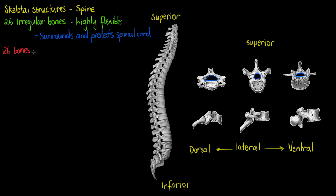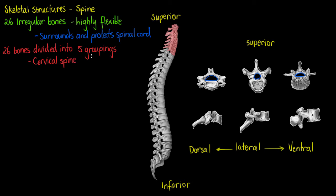We have 26 bones that make up our spine, and we are going to divide them into five separate groups. The first group, at the most superior end of our spine, is called the cervical spine. Of the 26 bones in our spine, seven of them are going to be found in our cervical region.